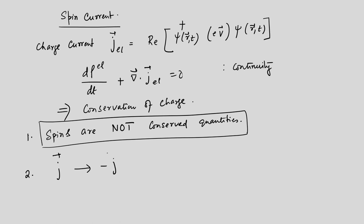J goes to minus J as T goes to minus T. The reason is that J equals eV, and velocity changes sign under the time reversal operation. However, J_s does not change sign as T tends to minus T. This is a very important thing, and it is related to the fact that spin currents can actually propagate without any dissipation.